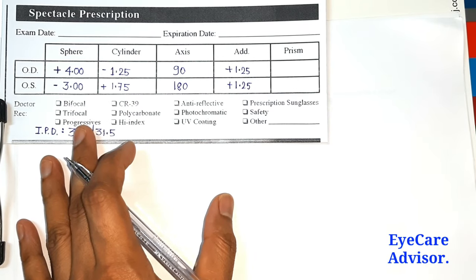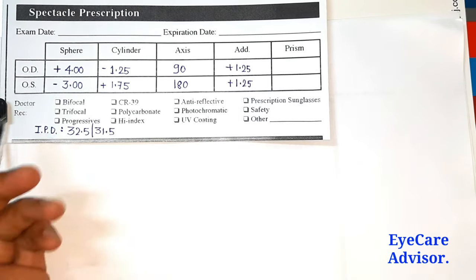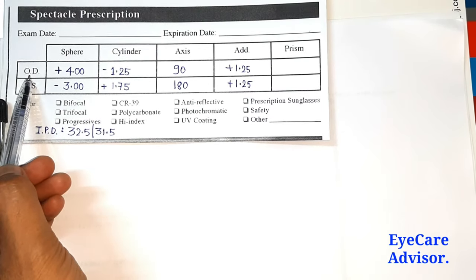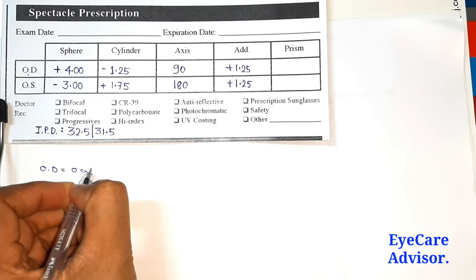Now I will explain what are the terms and how to read your eye prescription. First of all, you can see here it's written OD. OD means oculus dexter, that is the right eye.